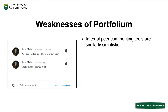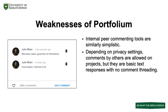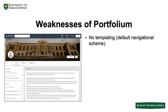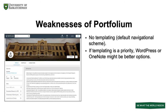The internal peer commenting tools in Portfolium are similarly simplistic. Depending on the privacy settings, comments by others are allowed on projects, but they just offer basic text responses with no comment threading. If internal peer commenting tools are a priority, OneNote might be a better option. There is no templating option with Portfolium; instead, all profiles are arranged with a default navigational scheme. If templating is a priority, WordPress or OneNote might be better options.